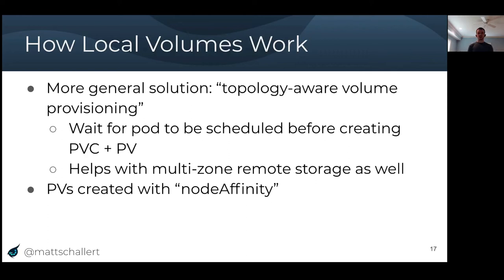This is something we frequently see in the Kubernetes community — rather than taking an immediate problem and solving just that narrow use case, figuring out a more general solution that works for multiple problems. Under the hood, persistent volumes now have a field called node affinity, similar to the node affinity terms you might see on a pod. This allows the persistent volume to express requirements for where it's scheduled — in the case of a local volume, maybe only on a certain node, or for zonal storage, only on nodes in a given zone.